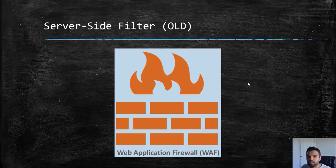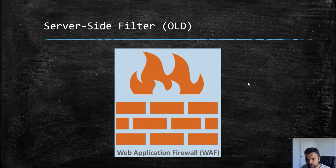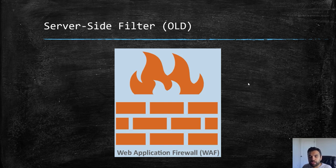So far we've learned a lot about server-side filters and mostly the application firewall — how we develop rules, analyze them, and try to bypass those rules. Usually when someone attacks an application, the WAF would prevent that after the traffic or payload has reached the server side.